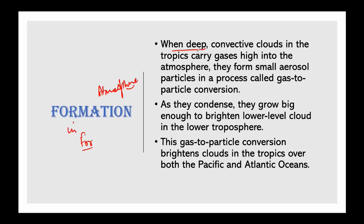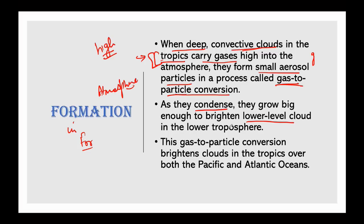When deep and convective clouds form over the tropics, all the gases are brought up into the atmosphere, and there the small aerosol particles form. This process — where gas particles become solid particles — is called gas-to-particle conversion. When these particles then condense, their size increases. In the lower troposphere, because of lower-level clouds, they become brightened. So basically, this gas-to-particle conversion causes clouds to brighten over the tropics — on the Pacific and Atlantic oceans.